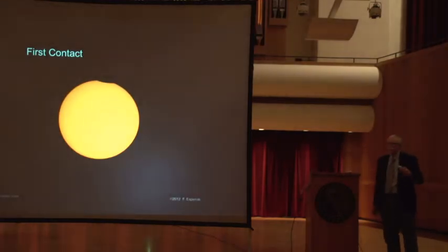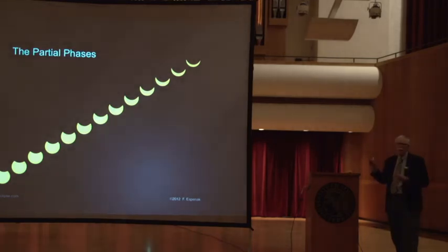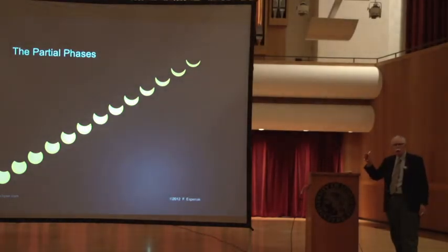Every total eclipse begins as a partial eclipse. In this case, that instant is called first contact when the edge of the Moon first appears along the edge of the Sun. And of course, during this period of time, this is the beginning of the partial phases, you've got to use some type of protection to look at the Sun at this time, either some sort of solar filters, which you can buy on the Internet, or some sort of projection technique.